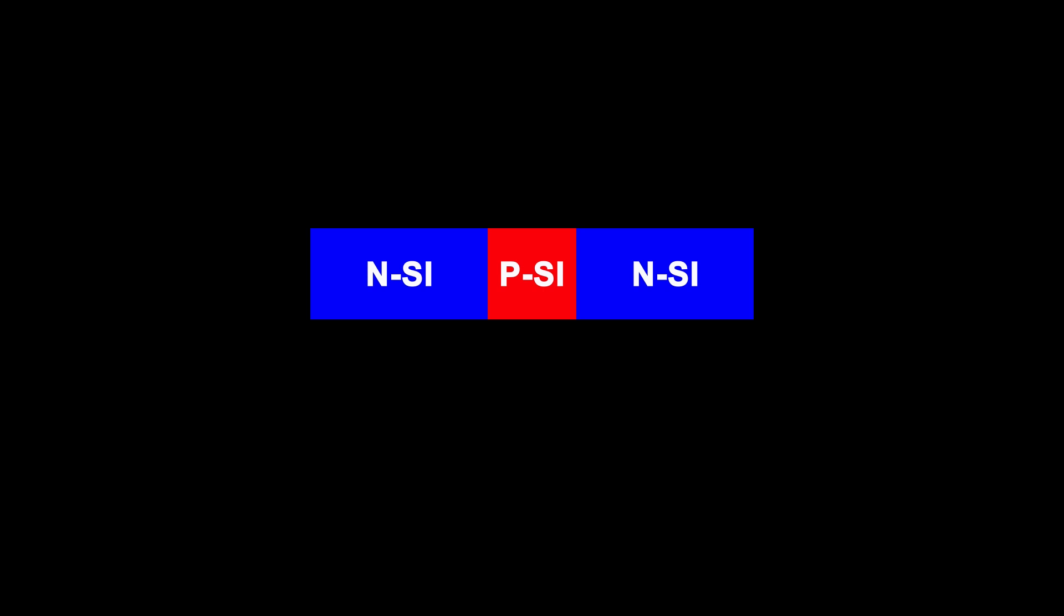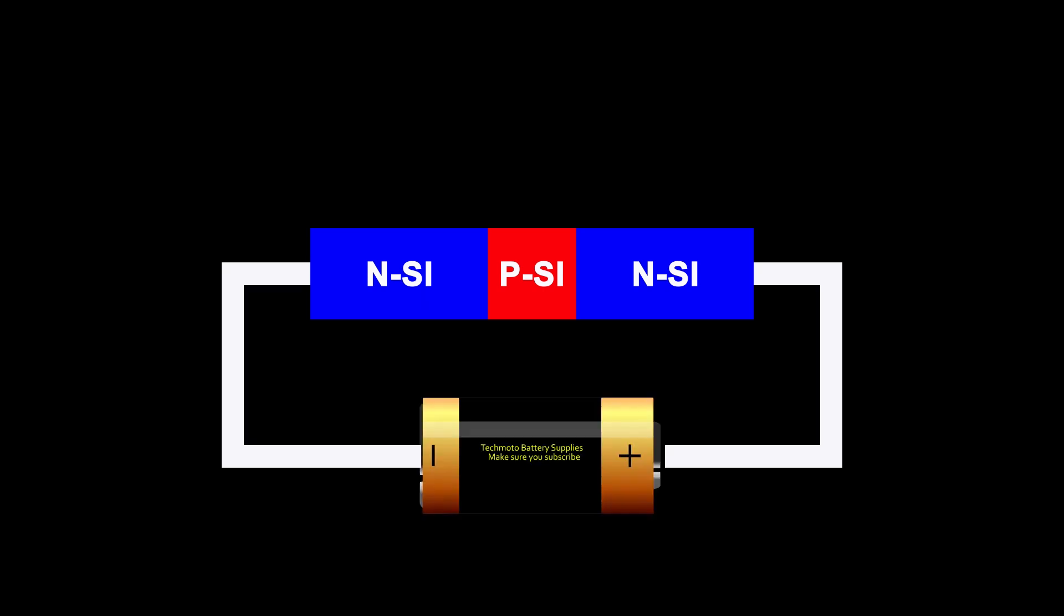First, we take our sandwiched, doped material in an NPN format. Then we connect a battery, and we connect the terminals of the battery to either side of our materials. At this point, no current is flowing, as previously described. As the small layer of positive material, sandwiched between the negative material, is stopping the current flow. By adding a secondary battery with the negative terminal connected to the common negative, and the positive terminal connected to the positive material, we can allow the electrons to flow through the semiconductor material.